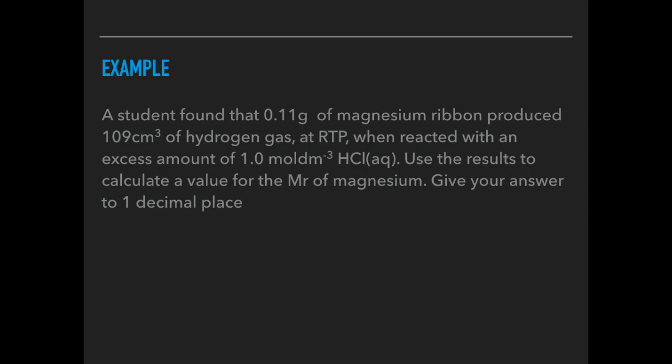Here's an example. A student found that 0.11 grams of magnesium ribbon produced 109 cm³ of hydrogen gas at RTP when reacted with an excess amount of 1.0 moldm⁻³ HCl(aq). Use these results to calculate a value for the Mr of magnesium. Give your answer to 1 decimal place.